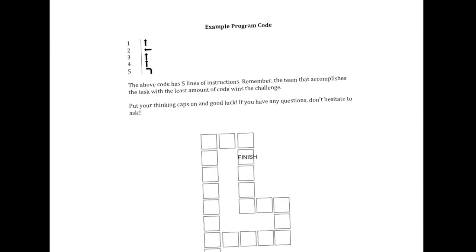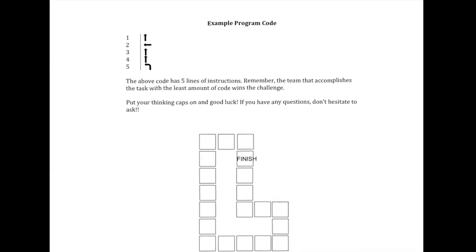So here's our example program code here. Looking at the code, you got five lines of code. So this is step forward, step to the left, a sideways step, step forward, step forward, and then left turn. And this is just an example of what it should look like.